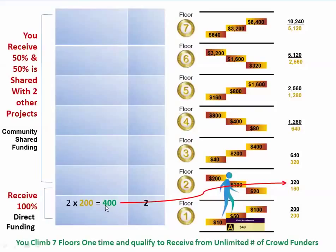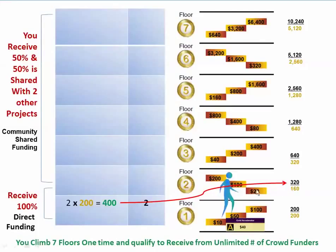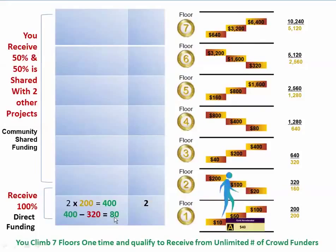Out of the $400 that you receive, based on our community guidelines, you share parts of what you receive forward with other projects that came before you. In this case, you're going to share first the $20 for the first step on the second floor, then the $100 step, then the $200 — which add up to $320. Your total donation to the project that came before you on the second floor is $320. You take that out of the $400, and you're left with $80 for your project.